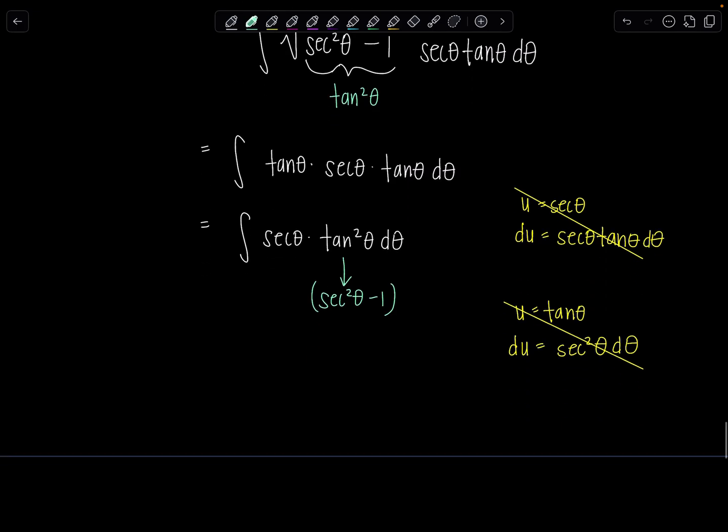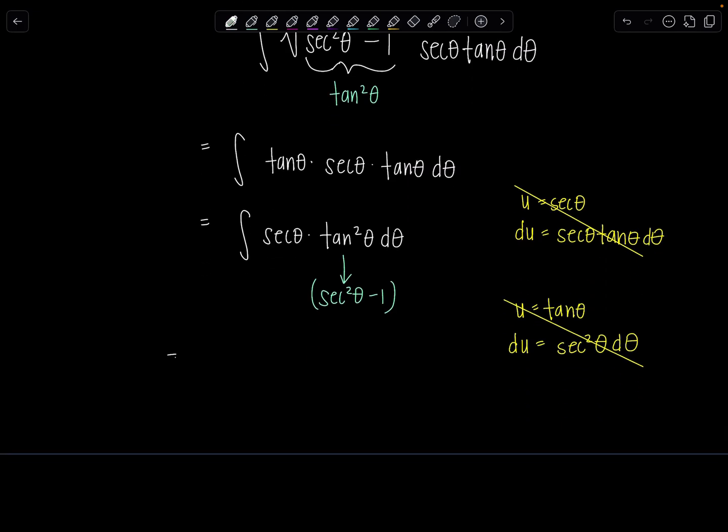I can rewrite tangent squared theta as secant squared theta minus one. And usually that will save the day. So then distribute now this secant that's sitting outside and we'll have integral secant cubed theta minus secant theta d theta. Okay. Here's the exciting part.